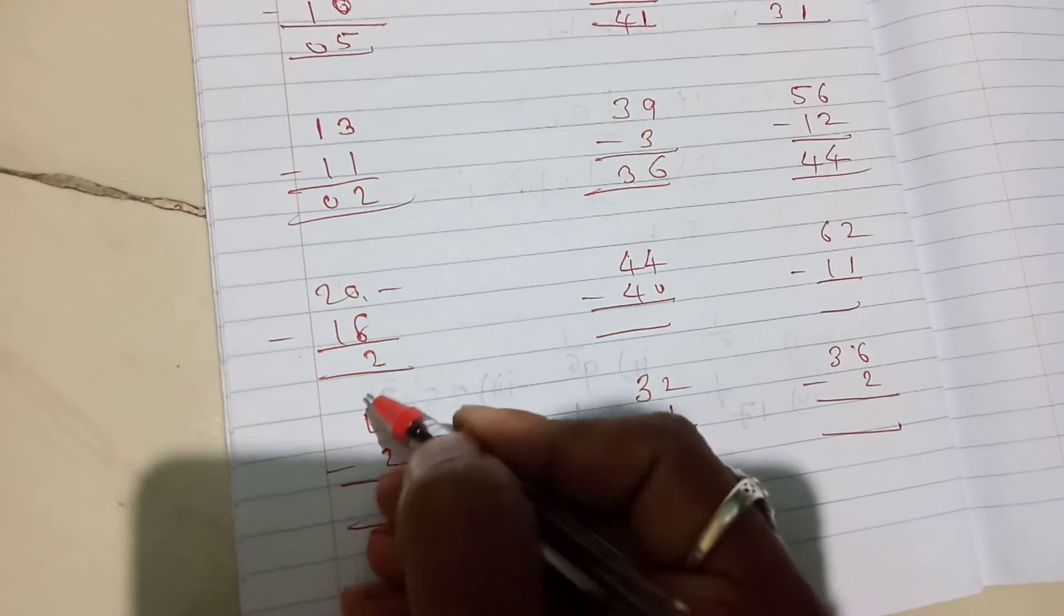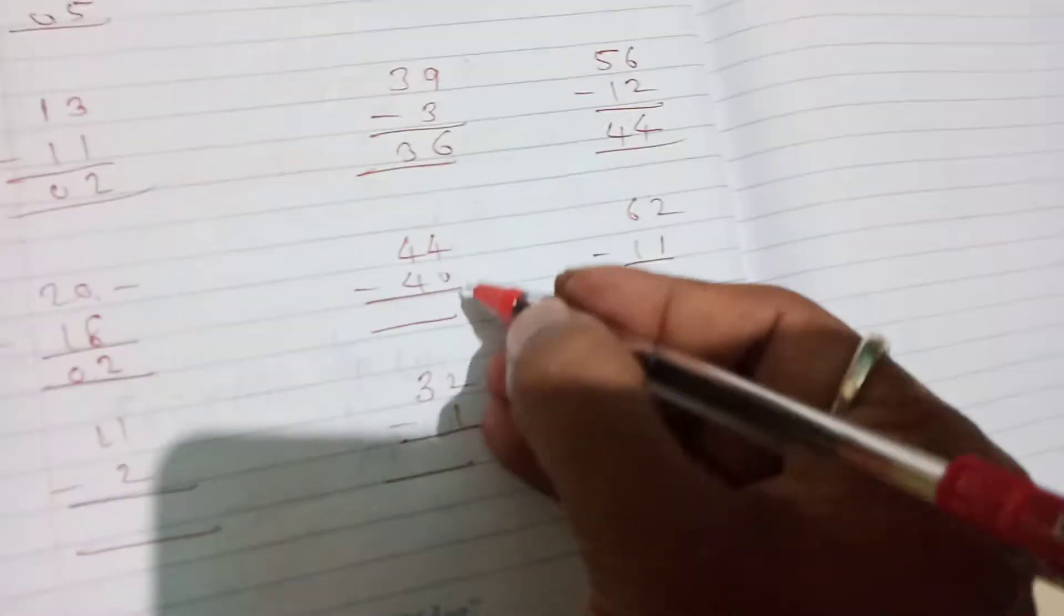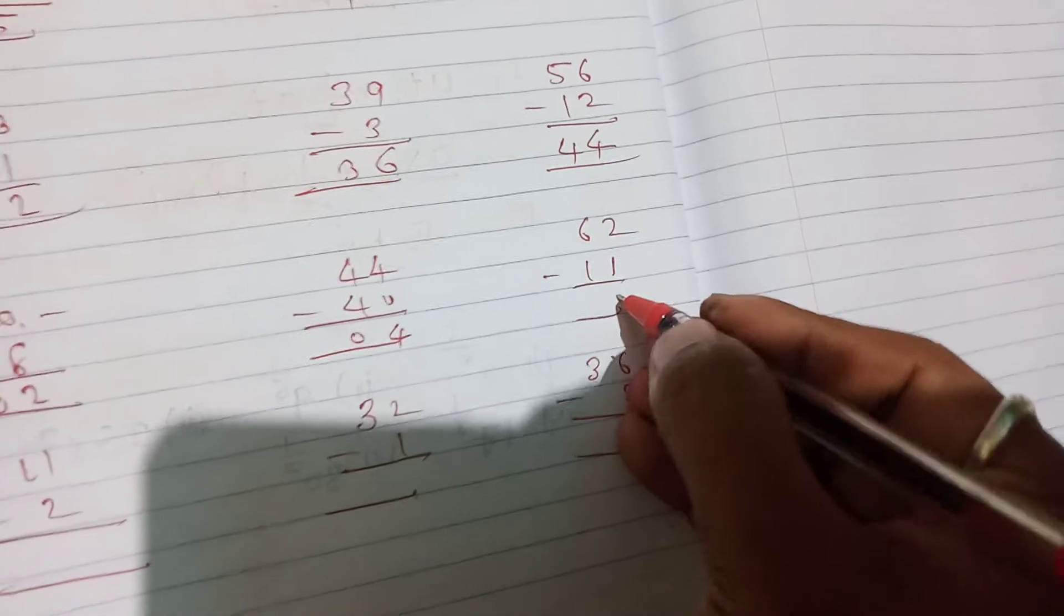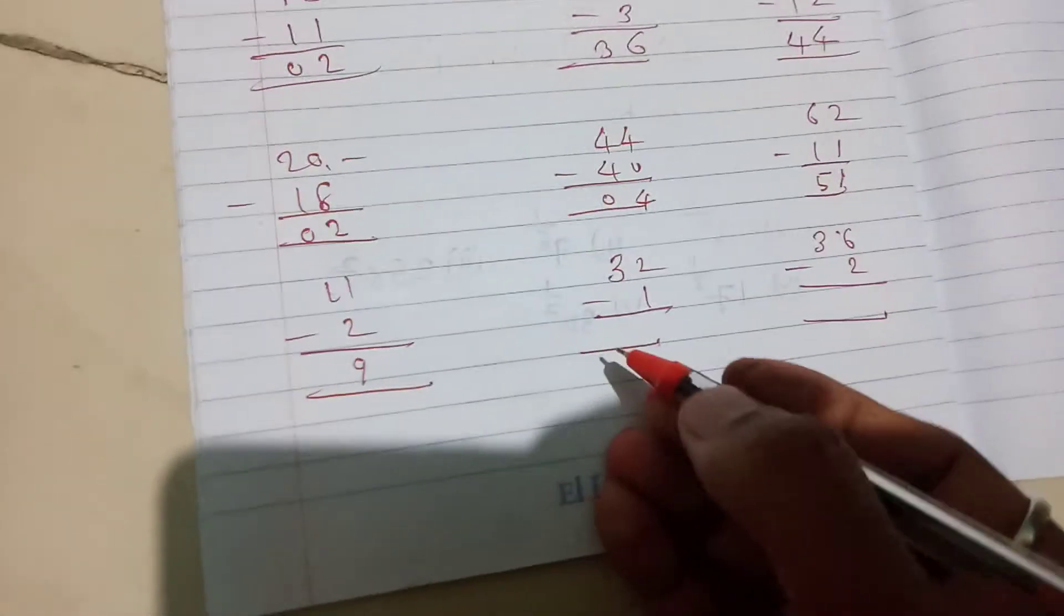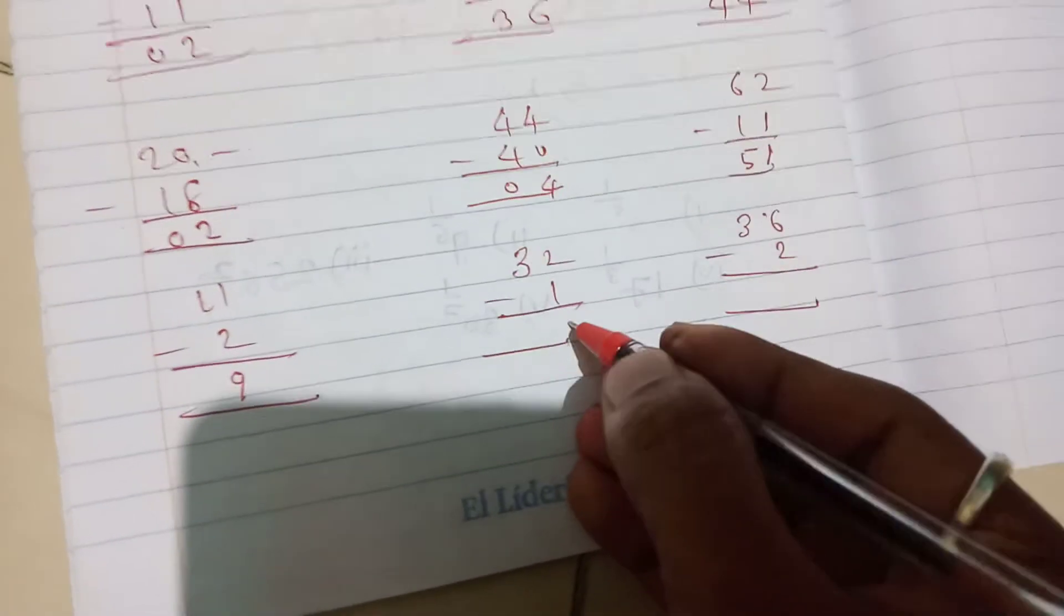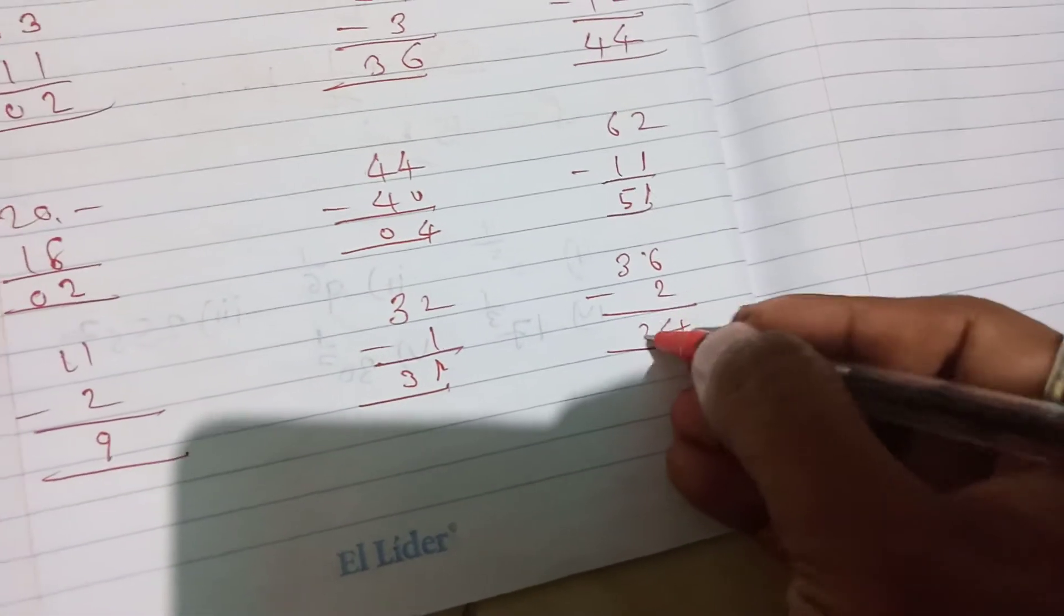20 minus 18 is 2. 0 minus 2 becomes 0. 4, 6, 0. 4, 4, 0. Then 2, 2. 6 minus 1 is 5. 11, 1, 2, 9. 2, 2, 2, 1, 2, 3, 3. This way. Okay?